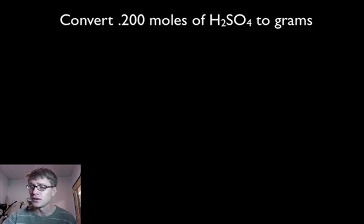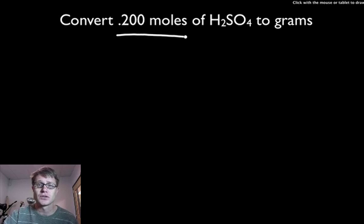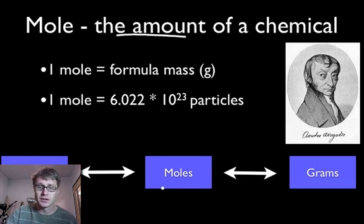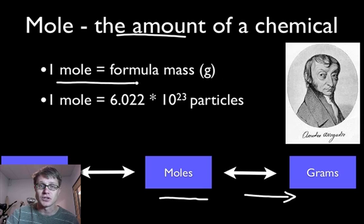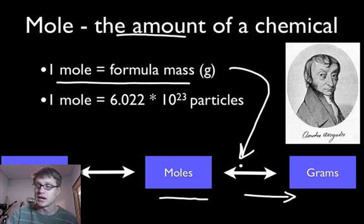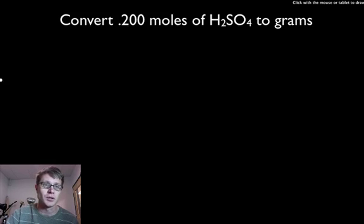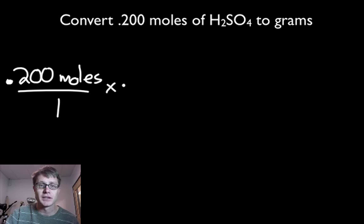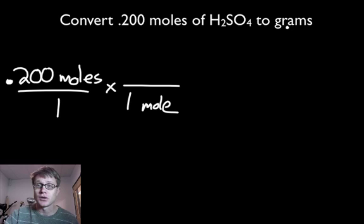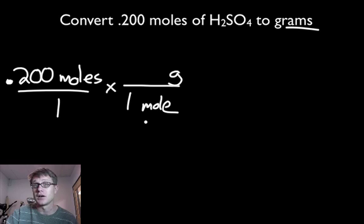Let's do some actual problems. Convert 0.200 moles of H2SO4 to grams. Going back to the chart, I have moles and I want to get to grams, so I'll use the moles-to-grams conversion where 1 mole equals the formula mass. Using factor label, I write 0.200 moles over 1, then multiply by a factor — I put 1 mole on the bottom to cancel moles, and grams on the top. The conversion between moles and grams requires the formula mass, which means I need to find it for H2SO4.